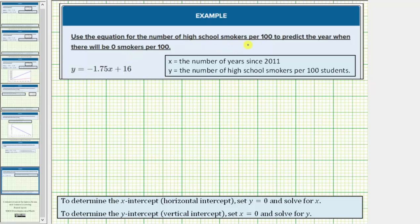We want to use the equation for the number of high school smokers per 100 to predict the year when there will be zero smokers per 100.